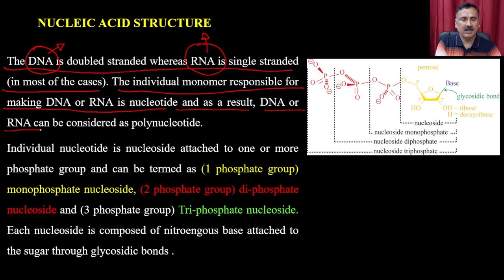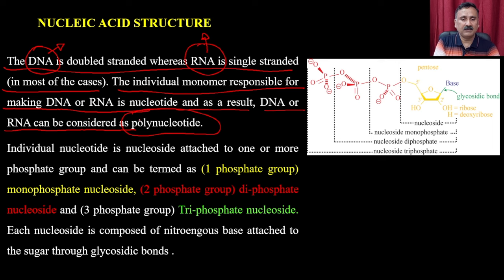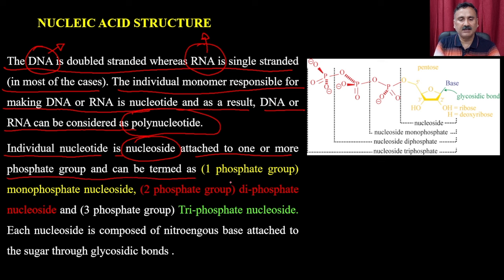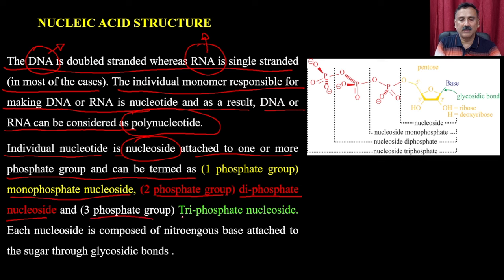Just as sugar is a polymer of glucose, DNA is a polymer of nucleotides — that is why it is called polynucleotide. An individual nucleotide has a nucleoside attached to one or more phosphate groups. If attached to one phosphate group, it is called a nucleoside monophosphate; two phosphate groups — nucleoside diphosphate; three phosphate groups — nucleoside triphosphate.